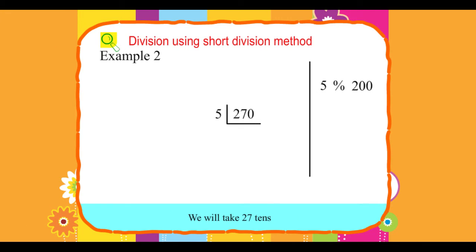Therefore, we will take 27 tens. We know 5 into 5 equals 25 and 5 into 6 equals 30. We will not consider 5 into 6 equals 30 as 30 is greater than 27.